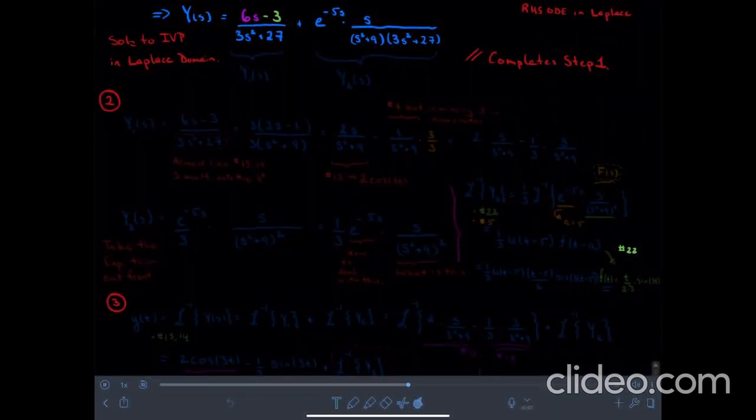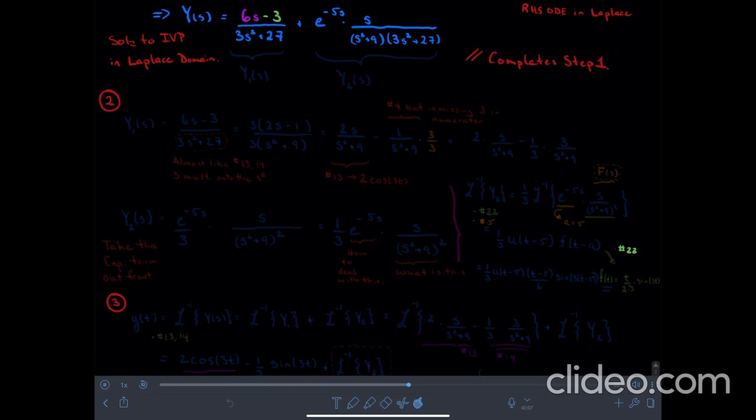Okay, so we're at step two, and what step two is about is to take this y of s, which is the solution to the initial value problem in the Laplace domain, and coax it back into the t domain by trying to get the terms in y of s to look as much like the table as humanly possible.